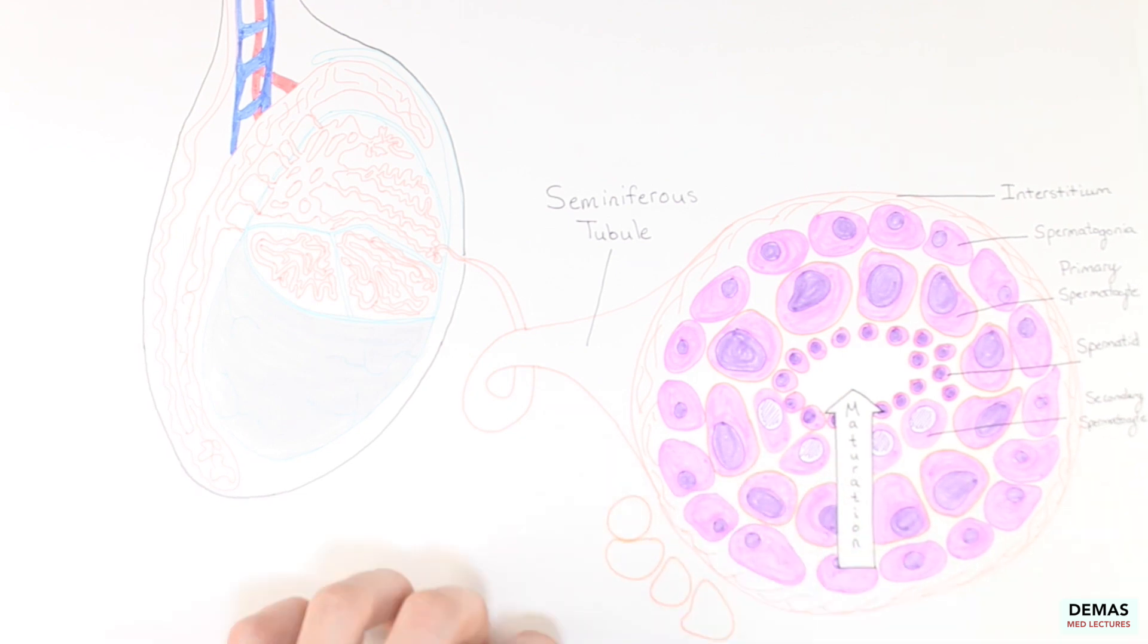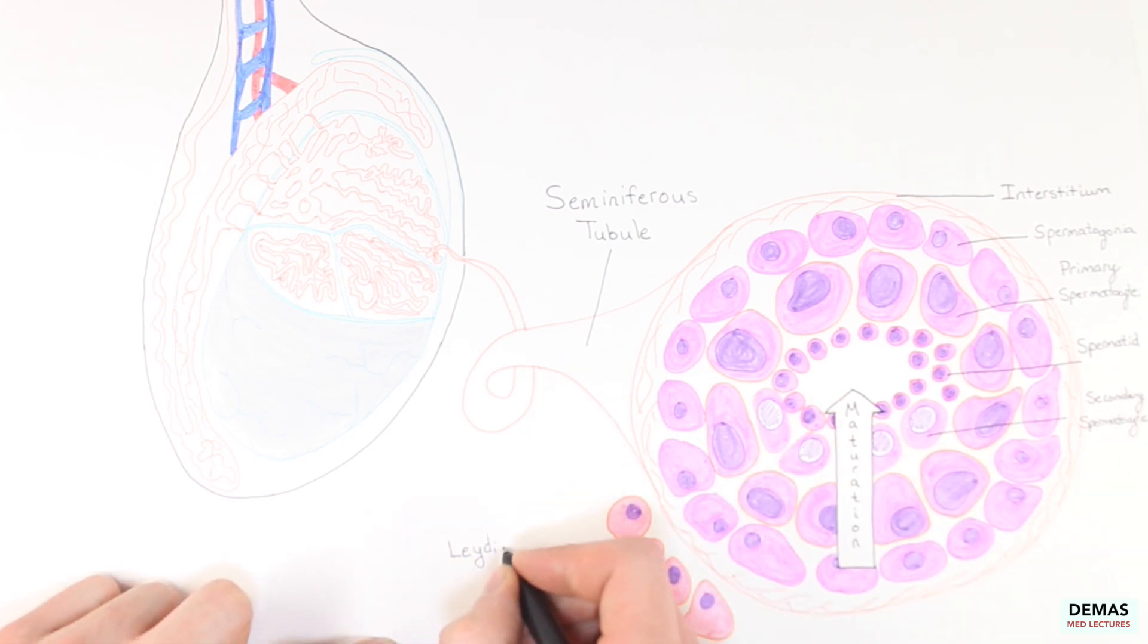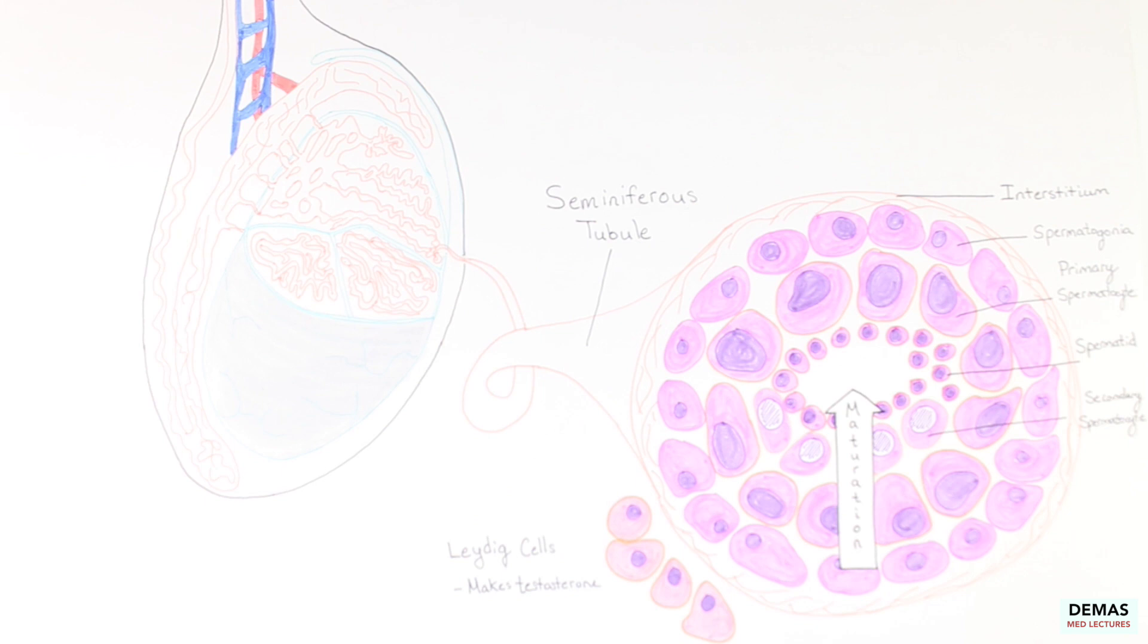Outside of the seminiferous tube and within the interstitium are Leydig cells. These cells respond to the hypothalamic pituitary axis to produce testosterone. It is not a coincidence that Leydig cells are in close association with the seminiferous tubules, as testosterone is vital for sperm maturation.